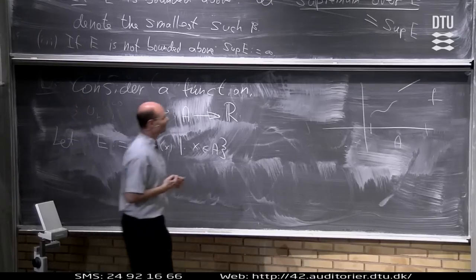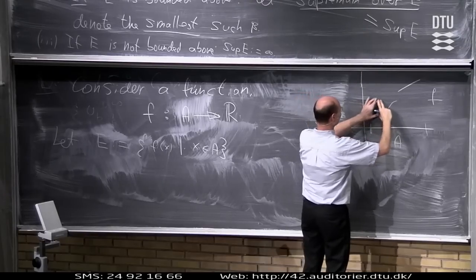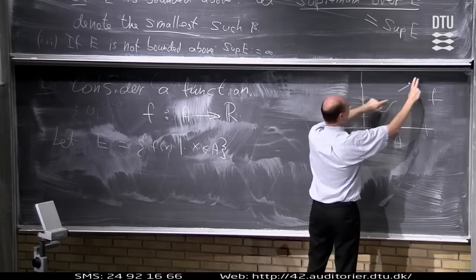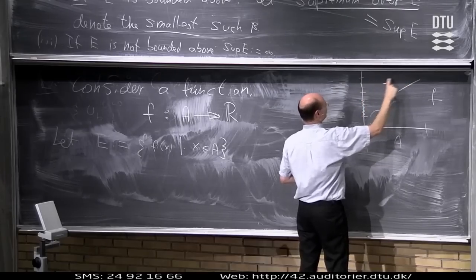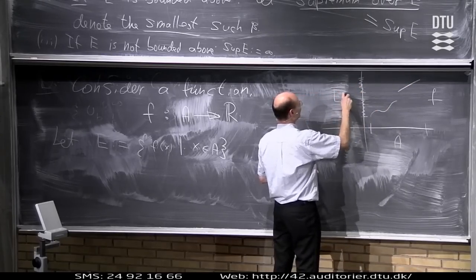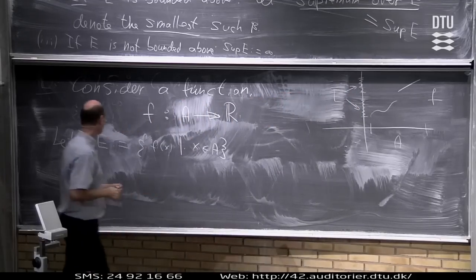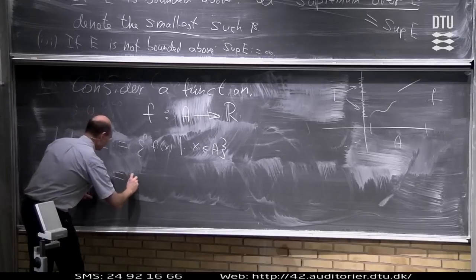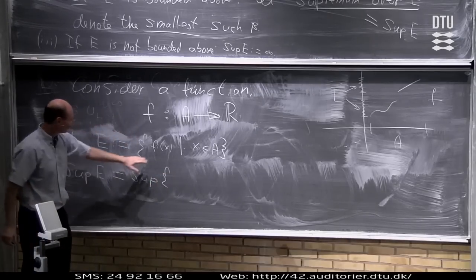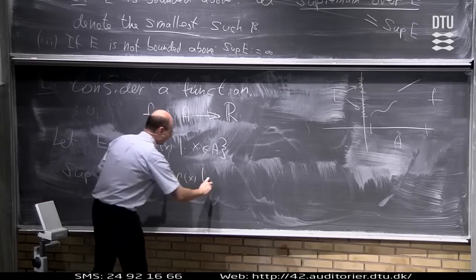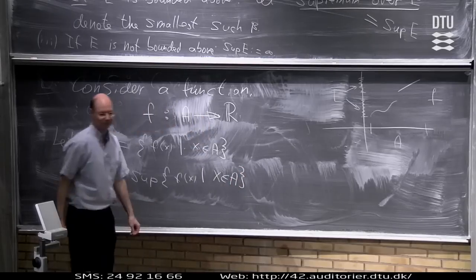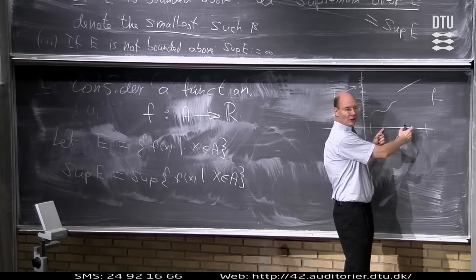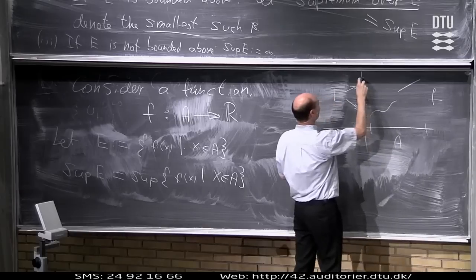On the figure we have here, you can see there's a part of the range sitting here, and then we also have a part of the range going here — these two sets together correspond to E. So now, if you want to write it down, the supremum over E means we are taking the supremum over all function values F of x, where x belongs to the set A. Sometimes there exists an x such that the function value is exactly equal to this supremum value.